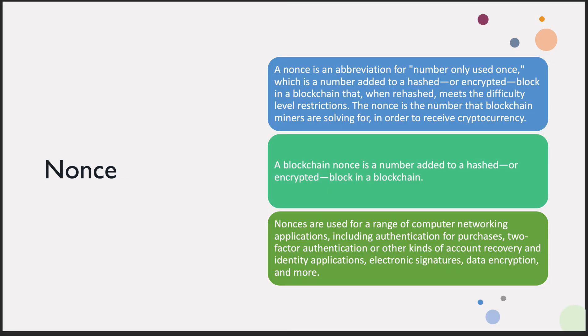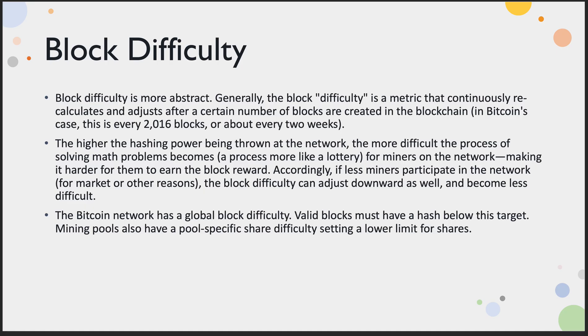The nonce is the number only used once — added or encrypted to a block in the blockchain when the rehash meets the difficulty level restrictions. The nonce is the number that blockchain miners are solving for in order to receive cryptocurrency. Nonces are used for a range of computing and networking applications: authentication of purchases, two-factor authentication, account recovery, and electronic signatures. It's used only once and not going to be used twice — a neat way of making sure that block is authenticated.